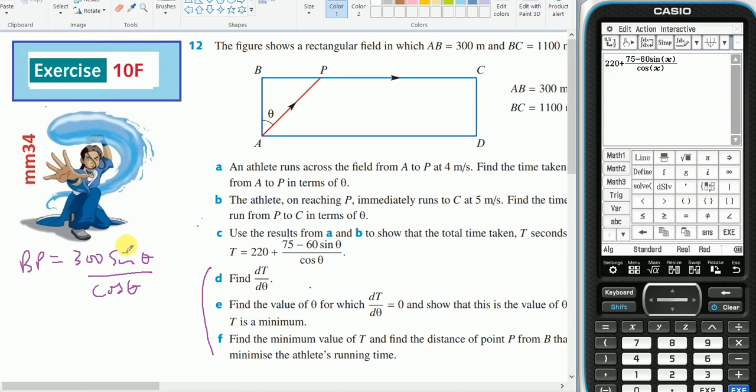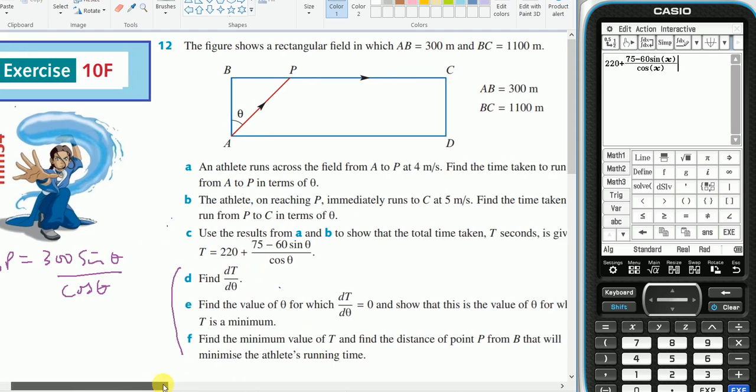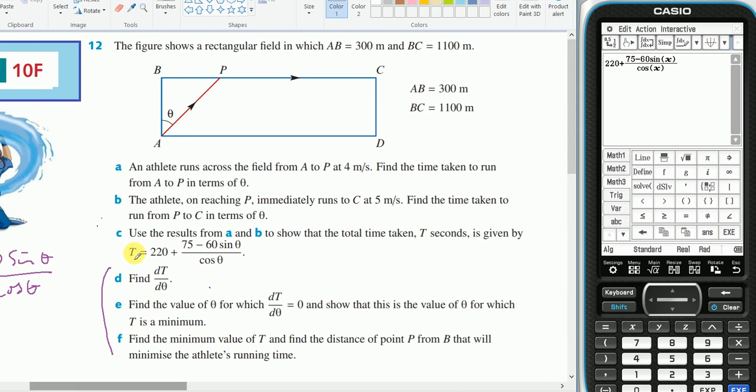Remembering that BP was 300 sin theta cos theta from the previous part of the question. I've shown that that equals this. I now have to find the derivative.